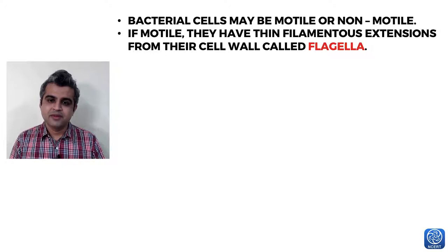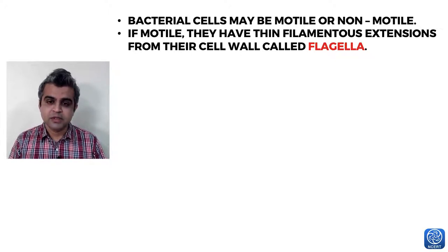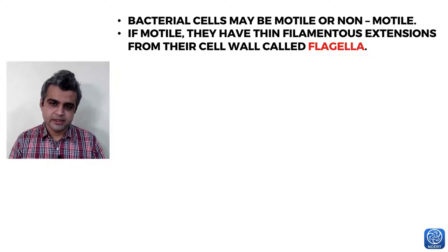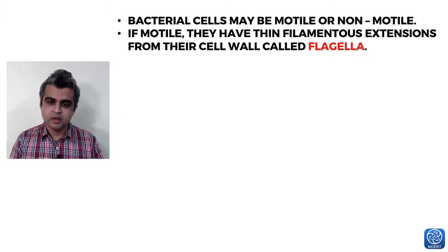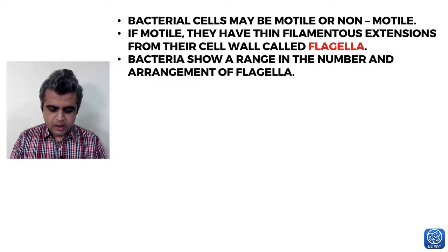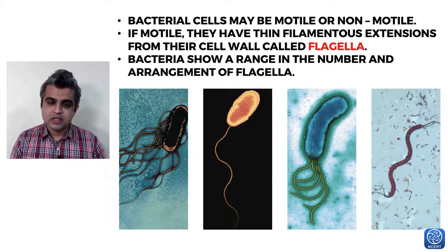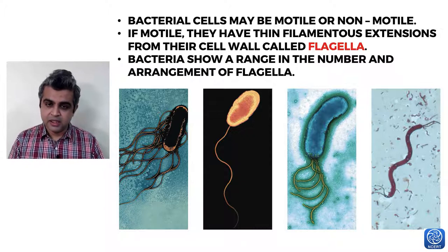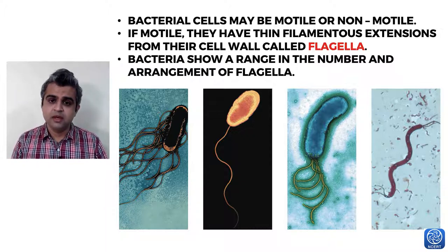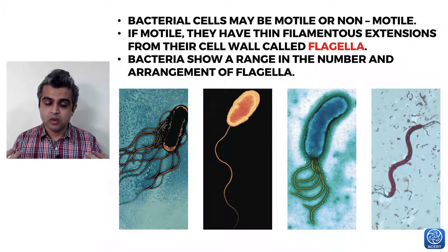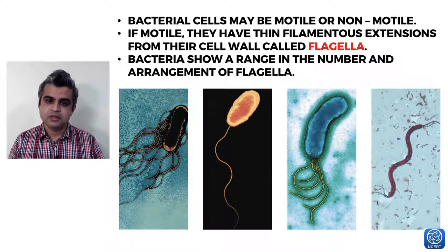Motile bacteria have filamentous extensions called flagella. Unlike eukaryotic cells which have both flagella and cilia for locomotion, prokaryotic cells only have flagella, and the structure is very different from a eukaryotic flagellum. Bacteria can show a range in the number and arrangement of flagella — one, many, a cluster at one end, clusters at both ends, or flagella surrounding the entire cell.